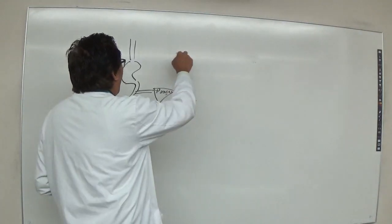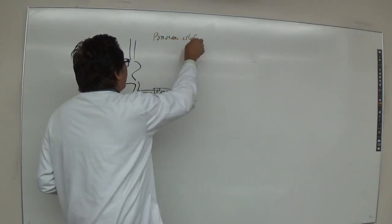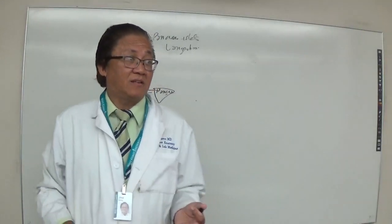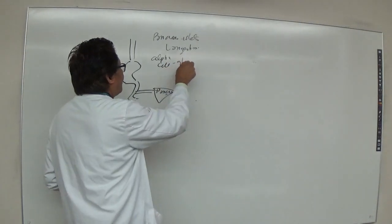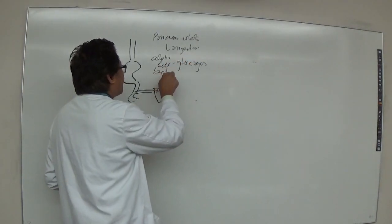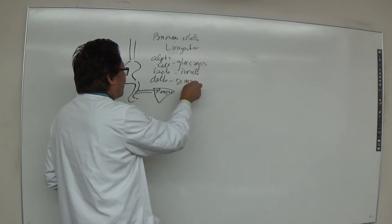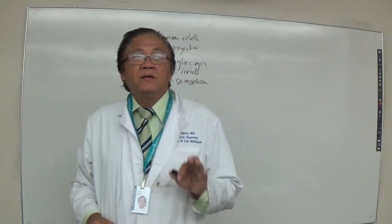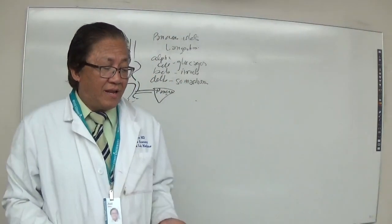On the other hand, the pancreas also has the islets of Langerhans. The islets of Langerhans have different cells: alpha cells, beta cells, and delta cells. In diabetic patients, the main problem lies in the beta cells — specifically the lack of insulin.